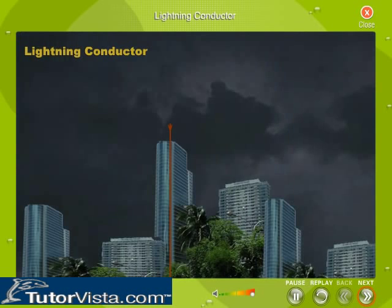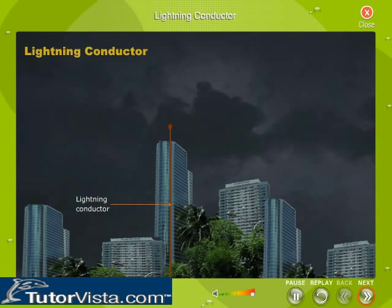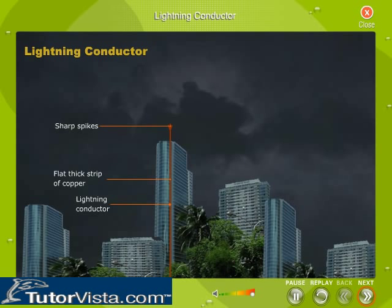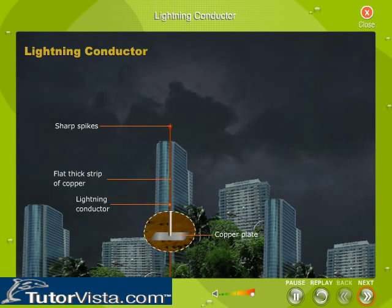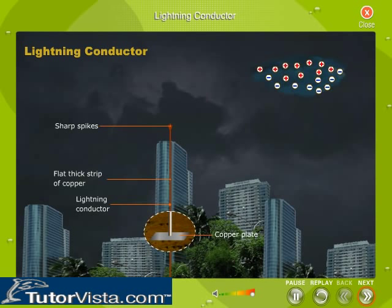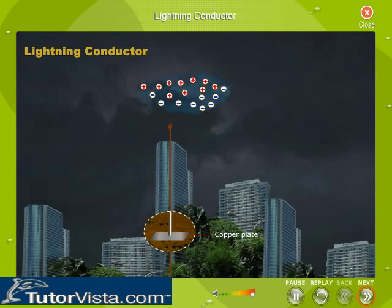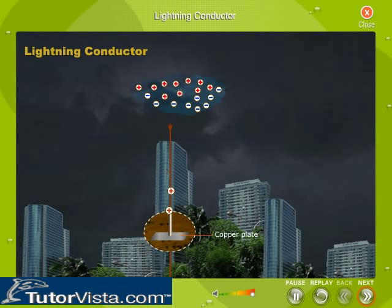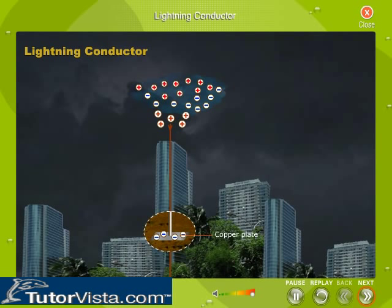A lightning discharge passing through a building can cause serious damage. However, a building can be protected if a lightning conductor is installed. A lightning conductor has a flat, thick strip of copper with several copper spikes projecting from it, placed at a height above the building. The lower end of the copper strip is connected to a copper plate buried deep in the earth to provide good earthing. When a charged cloud passes over the building, negative charges at the bottom of the cloud induce positive charge in the spikes and negative charge in the copper plate buried in the earth. The discharging action of the pointed ends sets up an electric wind of positive ions which neutralize the negative charges in the cloud.